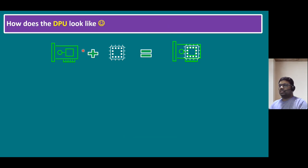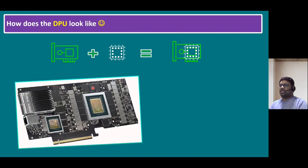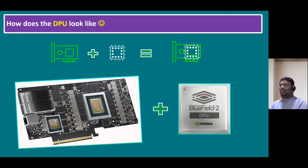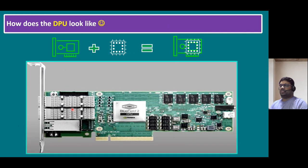In the physical view, this is a physical network interface card that also has a CPU socket inside. That socket is for inserting a processor — for example, the Mellanox BlueField DPU processor from NVIDIA. Once you insert that processor, the card becomes a DPU or Smart NIC. This card fits into a PCIe (Peripheral Component Interconnect) slot and has dual ports available.